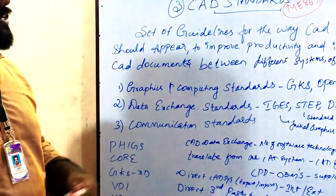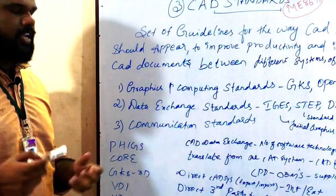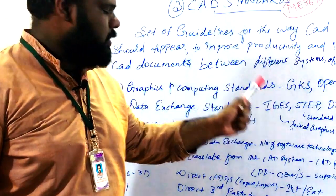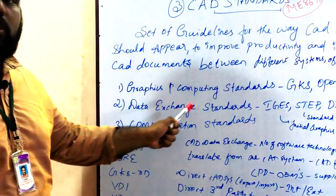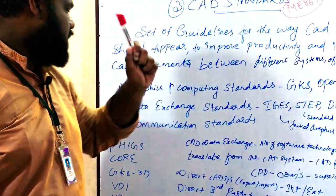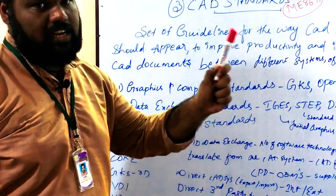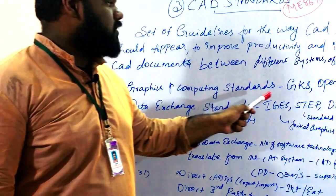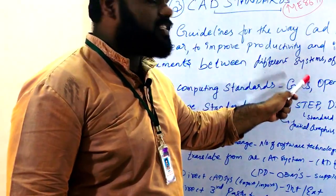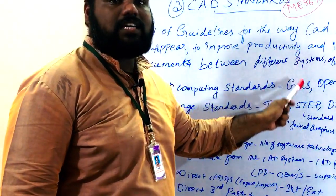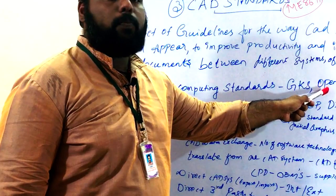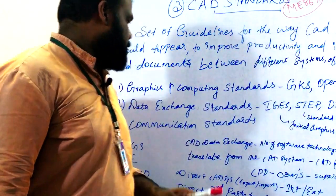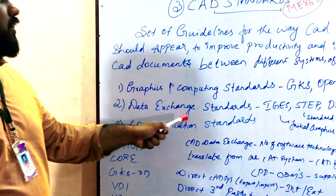Now we will see the different types of standards. One is Graphics and Computing Standards, second is Data Exchange Standards, and third is Communication Standards. Under Graphics and Computing Standards, we have GKS, that is Graphic Kernel System, and OpenGL, that is Open Graphics Library.